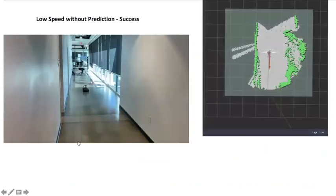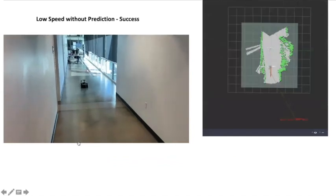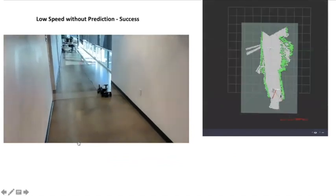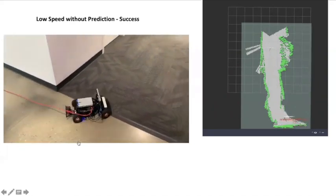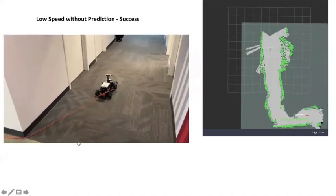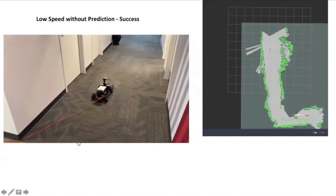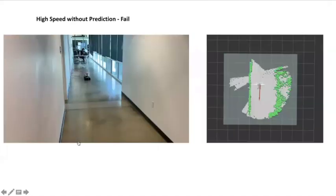Here are a set of videos that demonstrate the advantages of using occupancy map prediction. This is at a lower speed of 2 meters per second without map prediction, just to demonstrate that we are able to reach the goal albeit at a lower speed, but the trajectory was much jerkier.